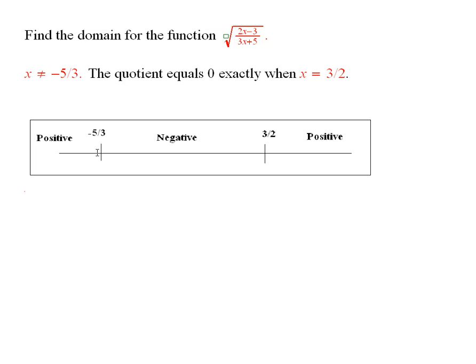In addition, you could have x strictly less than minus 5 thirds. So you can't have it equal to minus 5 thirds, because if you did, the inside part would not make any sense.